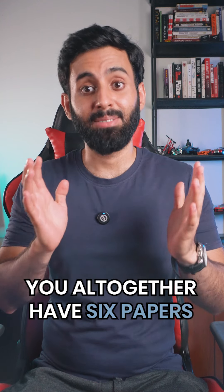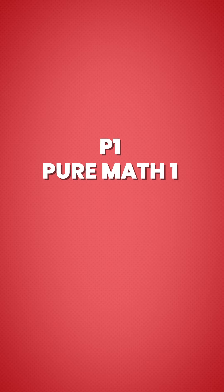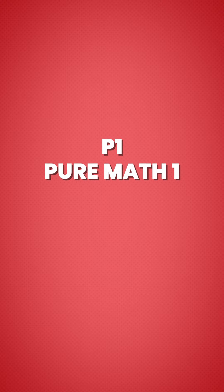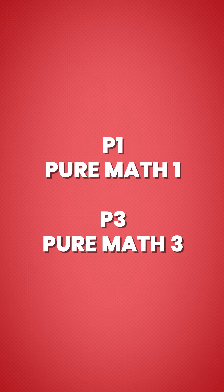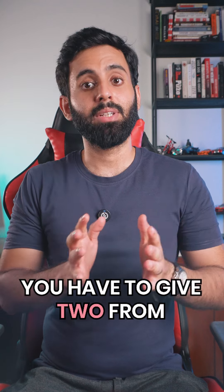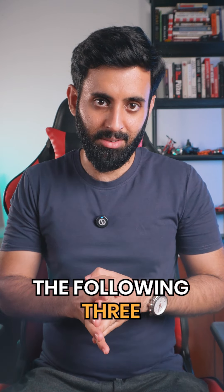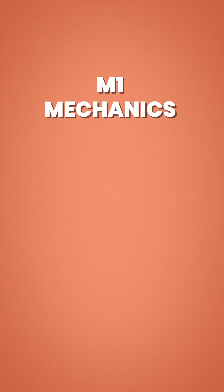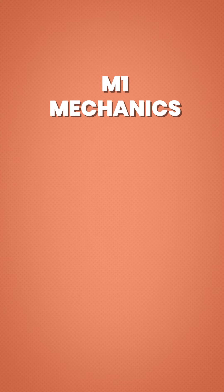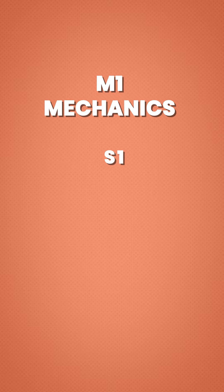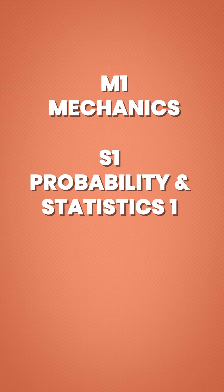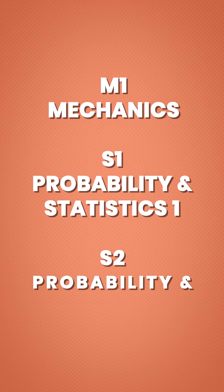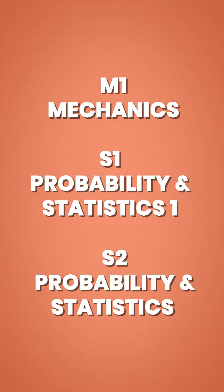In A-level math, you altogether have six papers, and you have to give Paper 1, which is Pure Math 1 — usually referred to as P1 — and Paper 3, which is Pure Math 3, referred to as P3. Along with these two, you have to give two from the following three: Mechanics, which is Paper 4 also known as M1; Probability and Statistics 1, which is Paper 5 also known as S1; and Probability and Statistics 2, which is Paper 6 also known as S2.